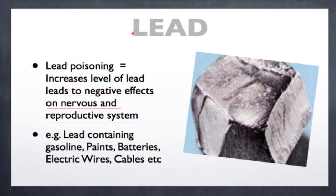Next is lead. Lead poisoning increases the level of lead, leading to negative effects on the nervous and reproductive system. Usually lead-containing sources such as gasoline, paints, batteries, electric wires and cables will cause contamination to increase.